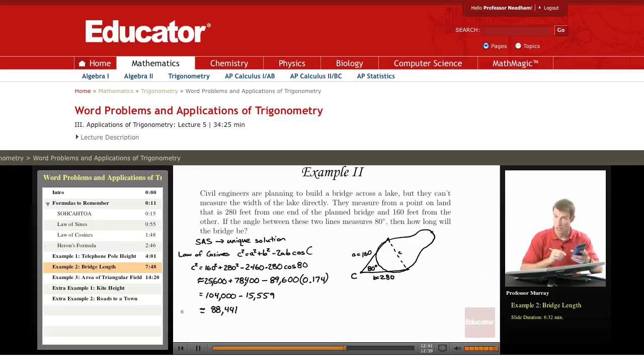And so if we simplify that, we get 88,441. That's C squared, so take the square root of that. C is approximately equal to 297.4, and our unit of measurement here is feet. So I give my answer in terms of feet.